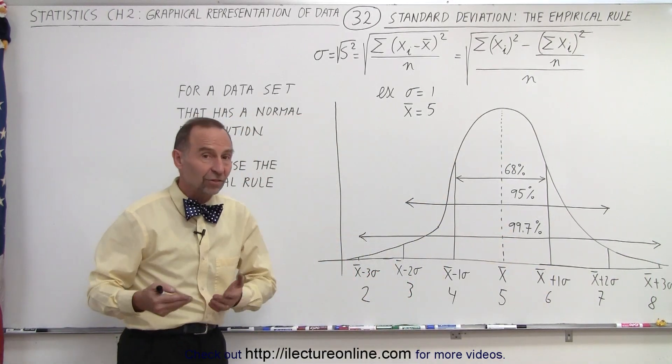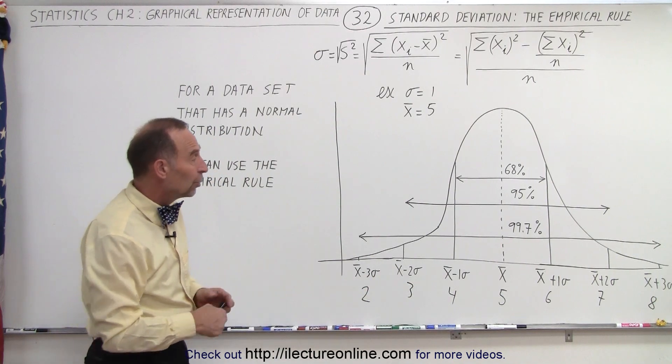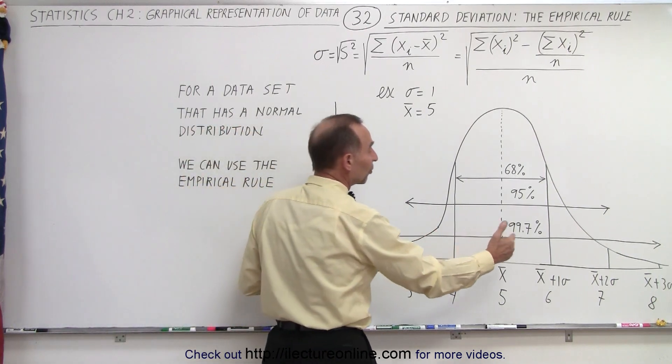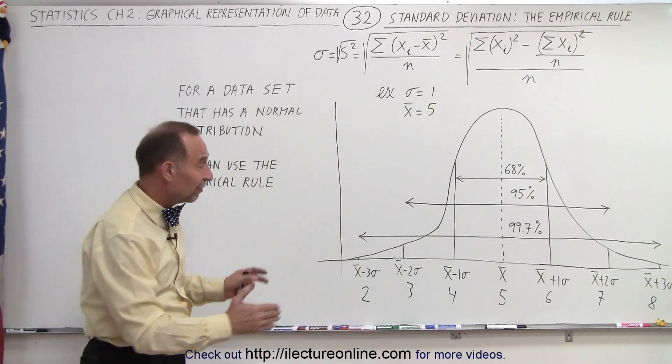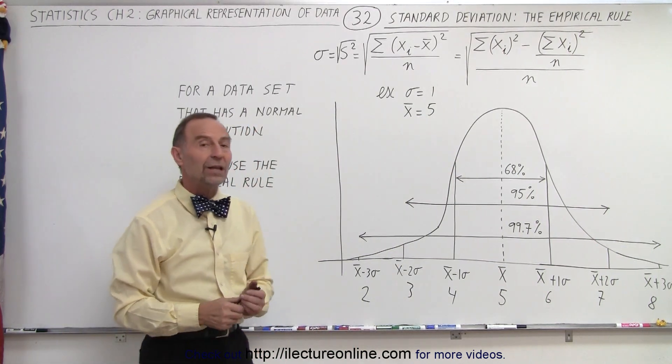For example, if your data set consists of a thousand data points, you'd expect that maybe three out of a thousand will fall outside the range from two to eight, and the other 997 would fall within the range of two to eight.